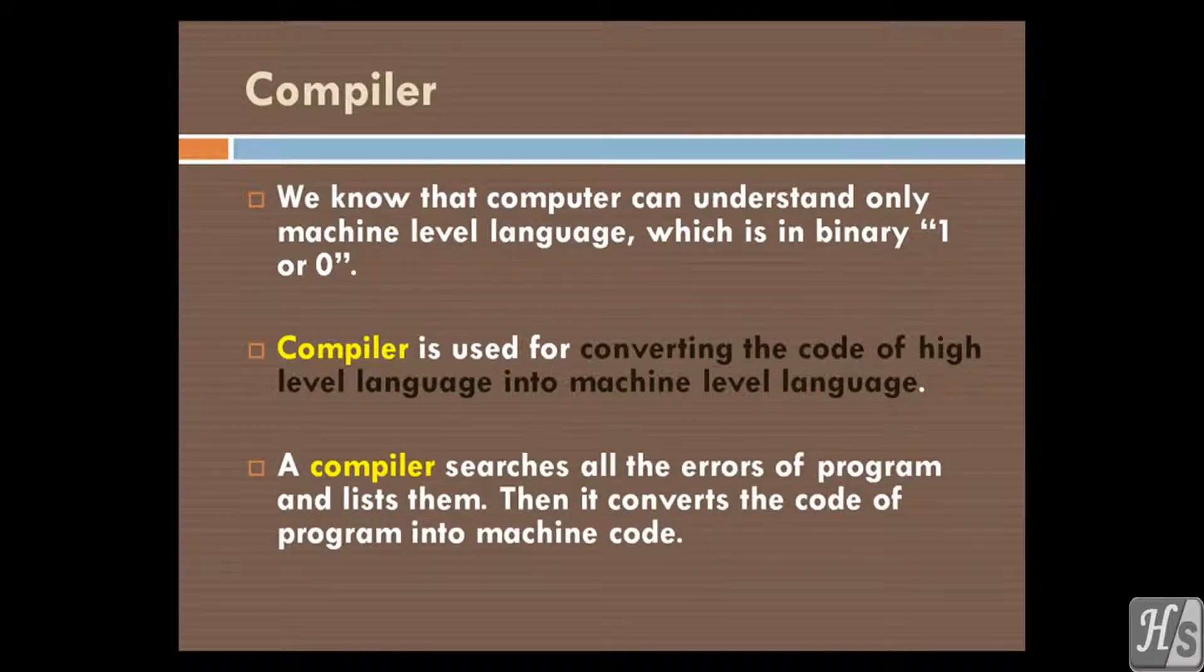A compiler searches all the errors of program and lists them. If the program is error free, then it converts the code of program into machine code.